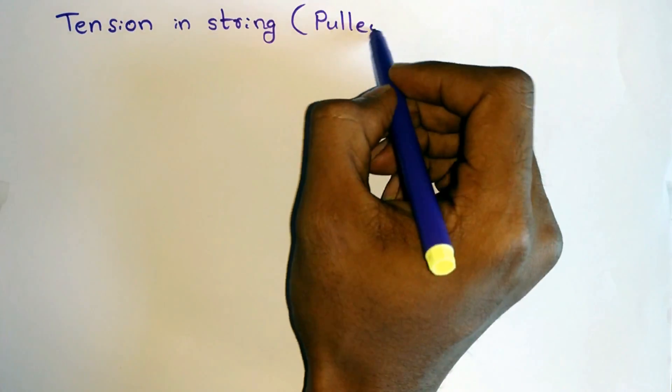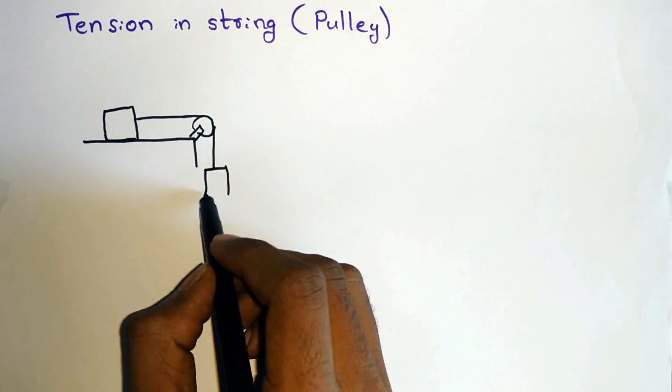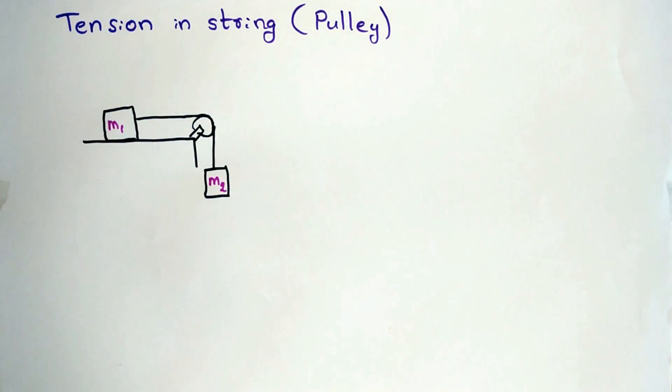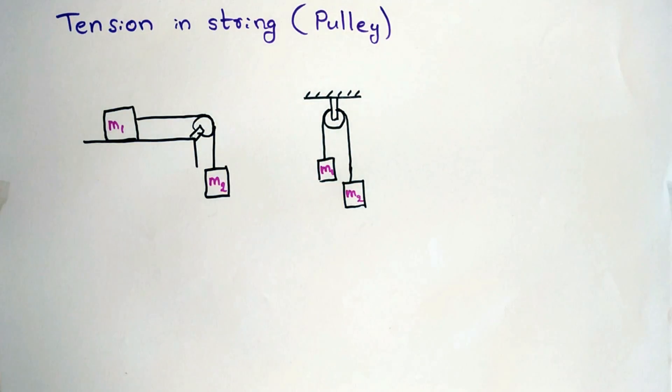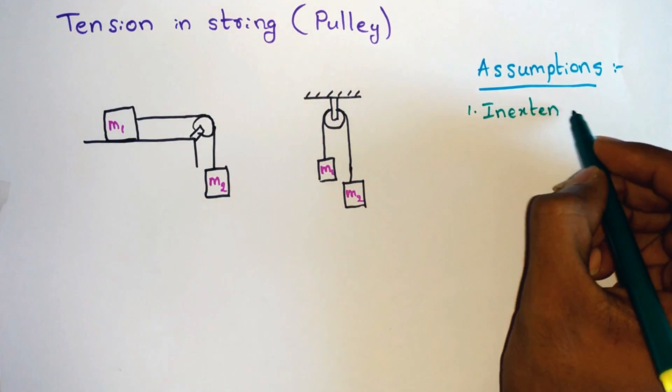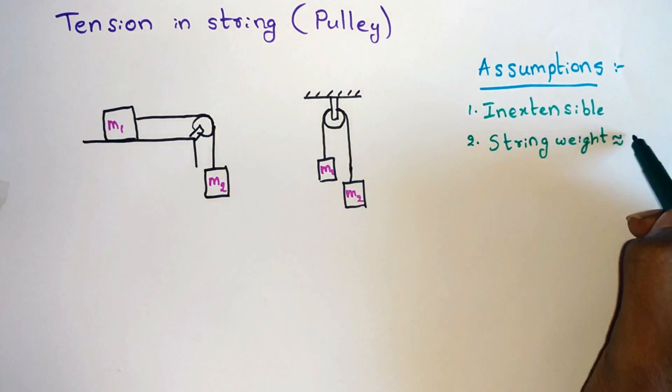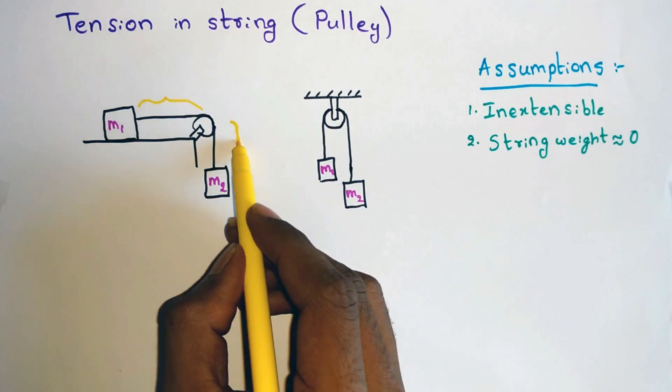Now let's discuss tension in string over pulleys. Let's consider an example in which one of the mass is hanging and another is placed on the ground, and let's take another example in which both masses are hanging. Here if you consider the same assumptions as before that is string is inextensible and its weight is negligible, under these two assumptions we can say that tension is uniform between pulley and the mass.